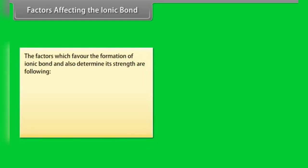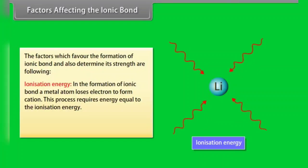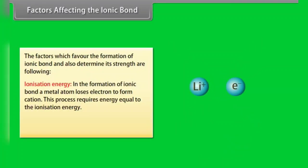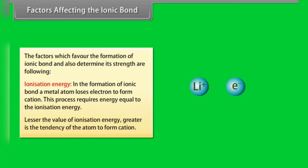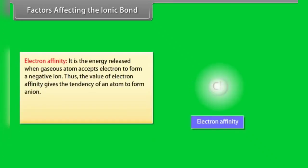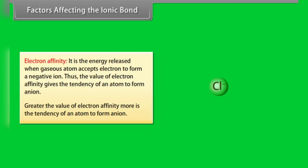The factors which favor the formation of ionic bond and determine its strength are: Ionization energy — in the formation of ionic bond, a metal atom loses electrons to form a cation. Lesser the value of ionization energy, greater is the tendency of the atom to form a cation. Electron affinity — it is the energy released when a gaseous atom accepts an electron to form a negative ion. Greater the value of electron affinity, more is the tendency of an atom to form an ion.